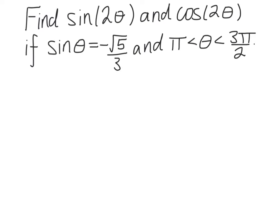In this video, I'm going to find sin(2θ) and cos(2θ), where sinθ is given as negative root 5 over 3, and θ is restricted to the interval π to 3π over 2.